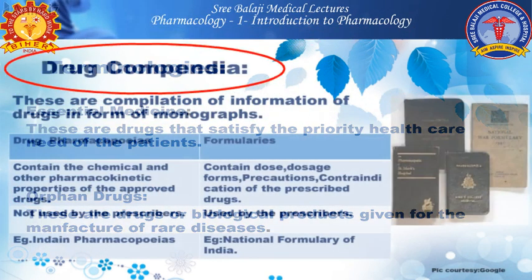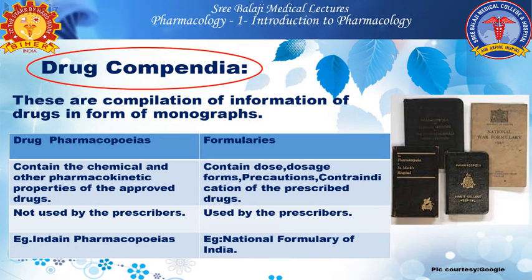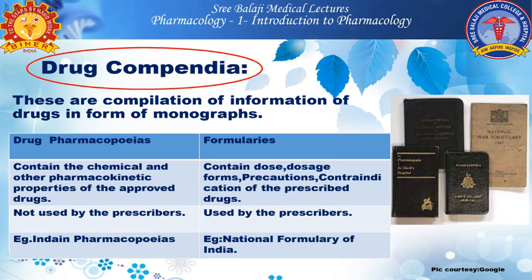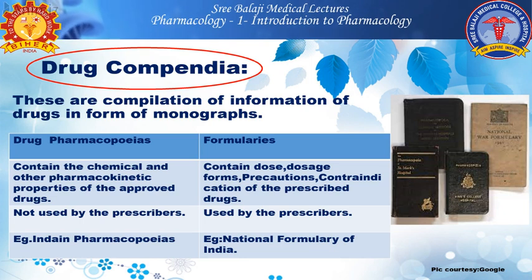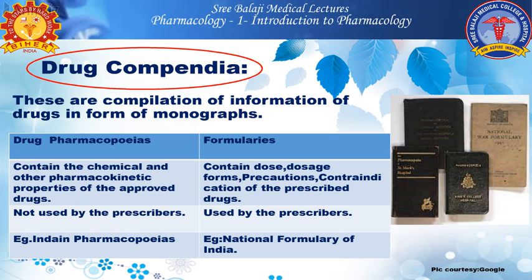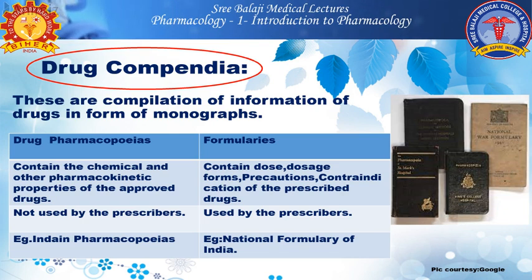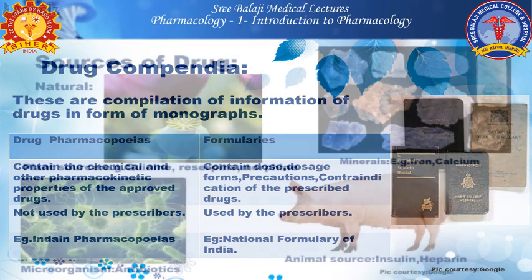Finally, introducing drug compendia — these are compilations of information about drugs in the form of monographs. There are two different types: pharmacopoeias and formularies. Pharmacopoeias contain the chemical and other pharmacological properties of approved drugs, whereas formularies contain the dose, dosage form, precautions, and contraindications of prescribed drugs. Pharmacopoeias are not used by prescribers, whereas formularies are used by prescribers. An example is the Indian Pharmacopoeia as a drug pharmacopoeia, while the National Formulary of India is the formulary used by prescribers.